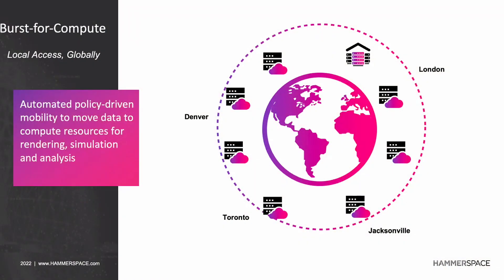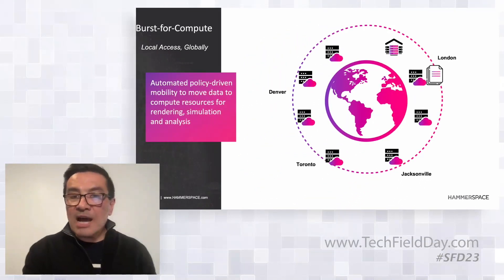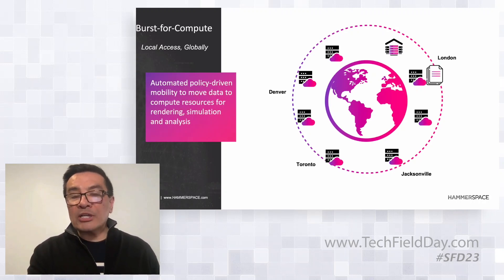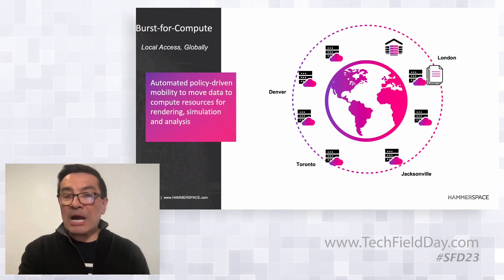One of the main use cases we're seeing with customers is Burst for Compute, where they have workloads that require a lot of compute power. In rendering movies, it takes millions of files and between 50,000 and 100,000 cores to render a two-hour movie. Customers often don't have that much compute in their own environment, so they use the cloud — but that can cost literally a million dollars in power and cooling costs.